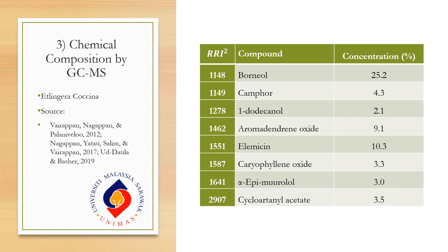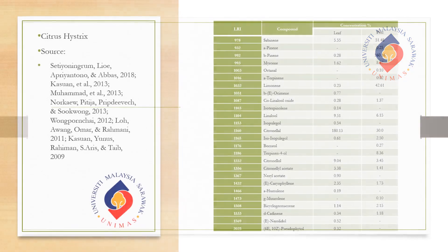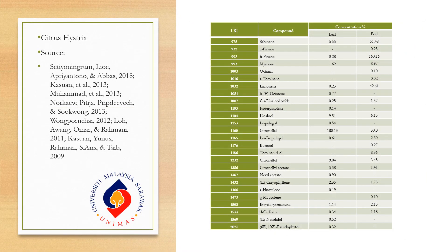This plant has limited information because not enough research has been conducted on it. For the chemical composition of Citrus hystrix, a total of 26 compounds were detected. For the leaves, the major compounds are citronellal and linalool, while for the peels, the major compounds are limonene and β-pinene. The peels have a much richer aroma profile compared to the leaves. It is also noted that it is hard to predict the composition result due to the many influencing factors, such as extraction method and extraction temperature.